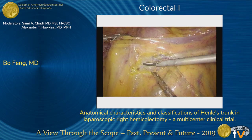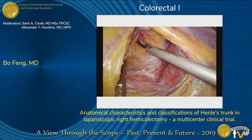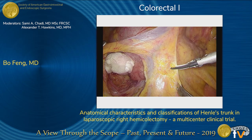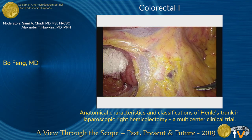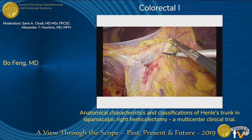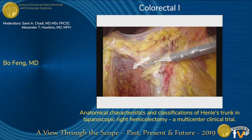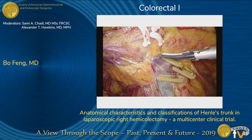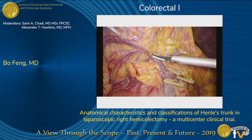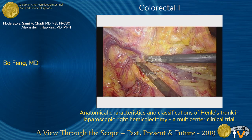We are performing a medial-to-lateral approach. We ask the assistant to retract the IMV first and find the proper space between the mesocolon and the Gerota fascia. We then identify the SMV and SMA, and separate the lymphatic tissues along the SMA and SMV until we find Henle's trunk. The dissection is performed along the vein, the duodenum, and the pancreas. As we can see here, there is only one vein originally from the colon — the right colonic vein — making this a type 1 case.